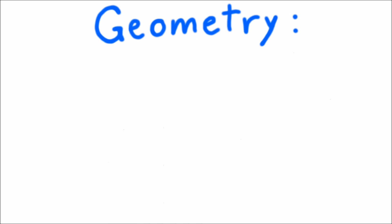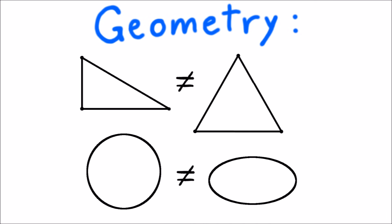We care about the difference between a right triangle and an equilateral triangle, for example, or the difference between a circle and another ellipse. But when we do topology these distinctions ultimately don't matter to us.